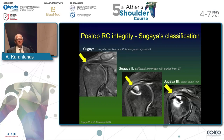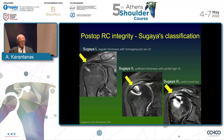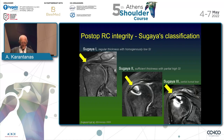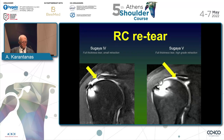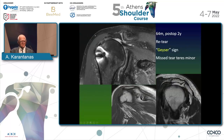Sugaya's classification addresses the degree of integrity of the rotator cuff. Sugaya 1: very nice result, tendon is dark after one year. Sugaya 2: abnormal signal but no discontinuity. Sugaya 3: possible tear on the bursal side. Sugaya 4: complete full-thickness tear with mild retraction not going beyond the most superior part of the humeral head. Sugaya 5: full-thickness tear with retraction extending medially beyond the most superior aspect of the humeral head.